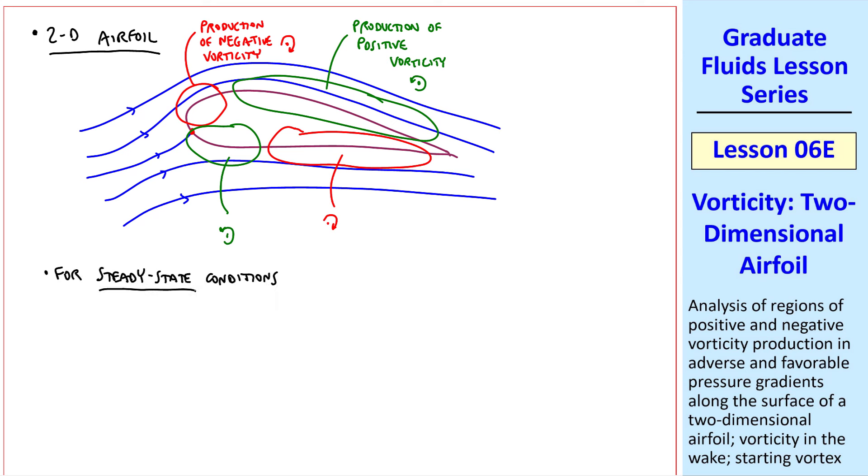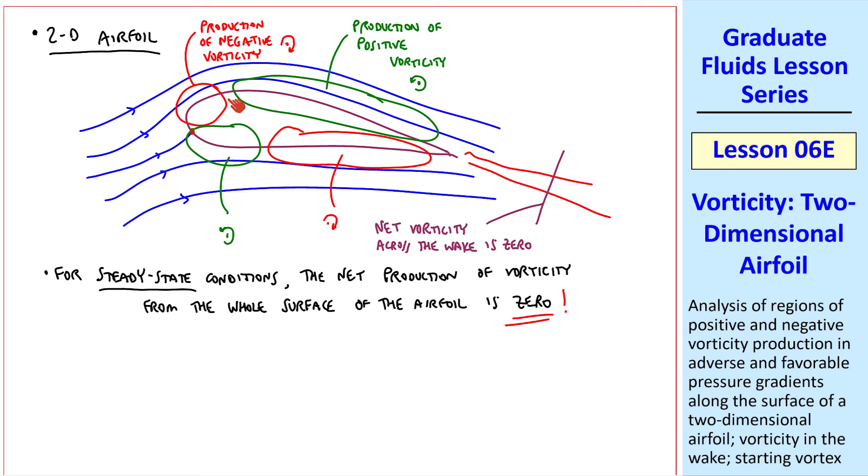Here's where it gets interesting. For steady state conditions, the net production of vorticity from the whole surface of the airfoil is zero. In fact, in the wake region, the net vorticity across the wake is also zero. The positive vorticity and the negative vorticity cancel each other out across the wake. All the vorticity generated at these surfaces are swept into the wake, and eventually cancel each other out.